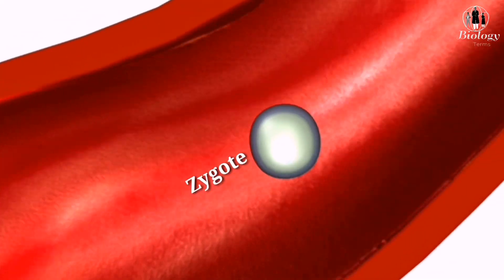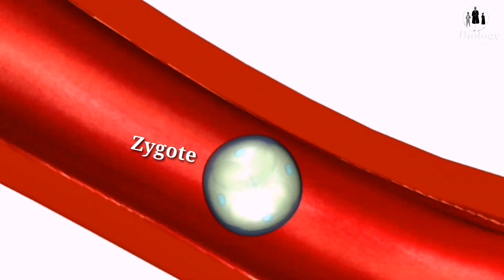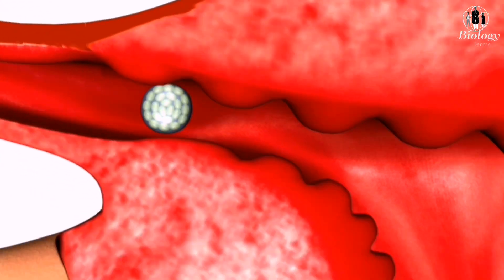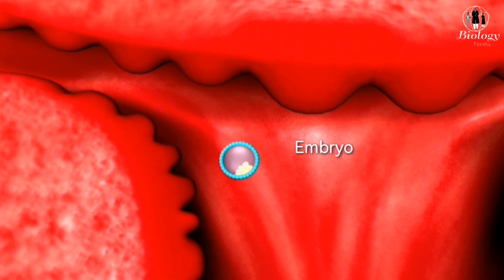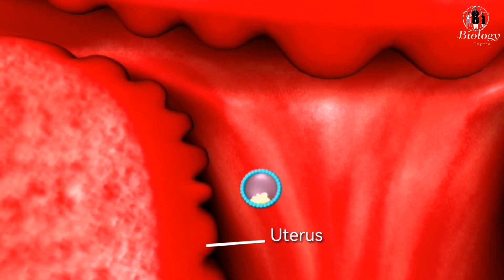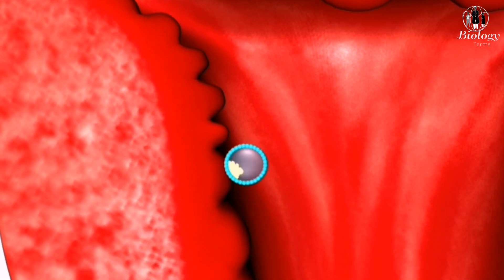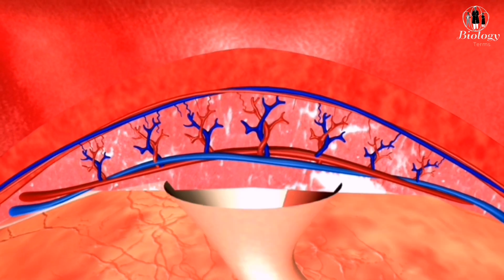The zygote then travels down the fallopian tube towards the uterus, dividing and growing as it goes. If the zygote successfully implants itself in the lining of the uterus, a pregnancy begins.